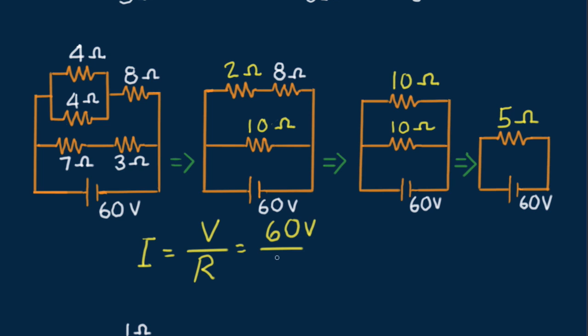we get 60 volts divided by 5 ohms... Ah-ha, 12 amps. That's 12 amps in this circuit, and in the others.